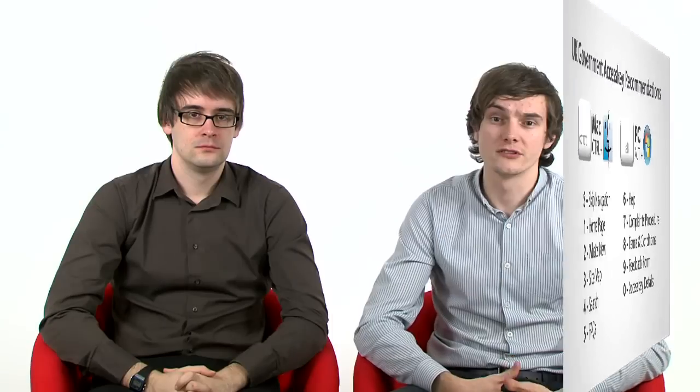The skip navigation shortcut should direct users below the navigation to the start of the primary content. Access keys 1 through 9 are page navigation shortcuts to take users to specific pages or forms on your website. The 0 access key should take your users to the access key information page that explains to users how they can use access keys which are available on your website.